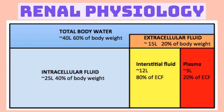Now we'll see what you learned about renal physiology. ECF is extracellular fluid — two compartments: vascular and interstitial. The interstitial is two-thirds larger than the vascular compartment. ICF stands for intracellular fluid compartment and is two-thirds larger than the ECF. So the ICF is the largest compartment overall.